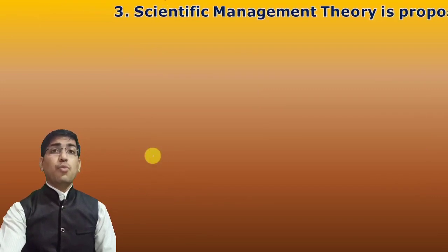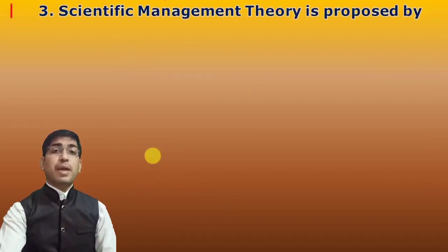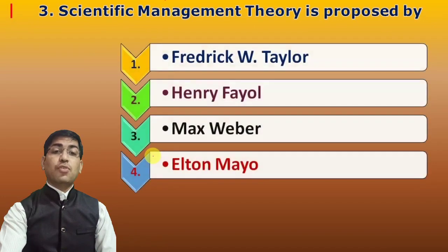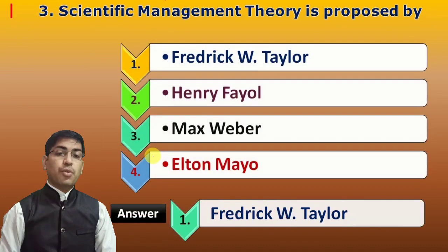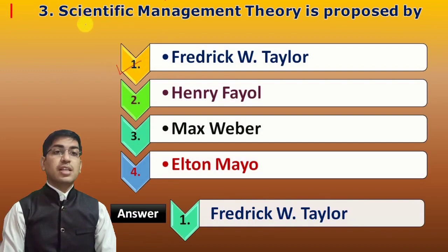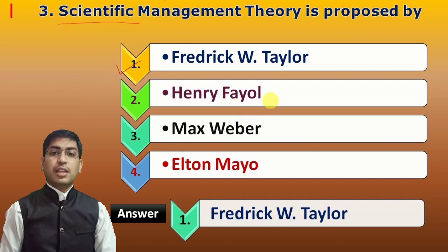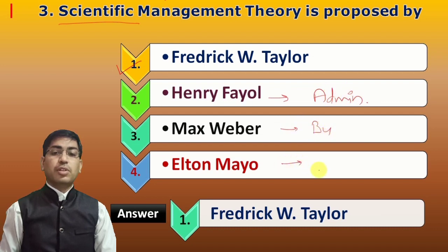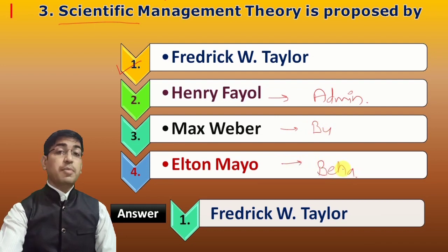Next question: Scientific management theory is proposed by whom? The four options are Frederick Taylor, Fayol, Max Weber, and Alternative. The answer is Frederick Taylor. Henry Fayol proposed administrative management theory. Max Weber proposed the bureaucratic theory, and the alternative theory is the behavioural theory.